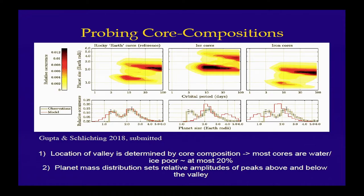You can also study the underlying mass distribution. We took the mass distribution from observations, but you can vary it and ask how much you can change it before violating observational constraints. Changing the planet mass distribution — favoring bigger planets versus smaller ones — changes not the location of the valley but the intensity or amplitude of the two peaks above and below it. So we can use this to start inferring additional information about the underlying mass distribution of those exoplanets.